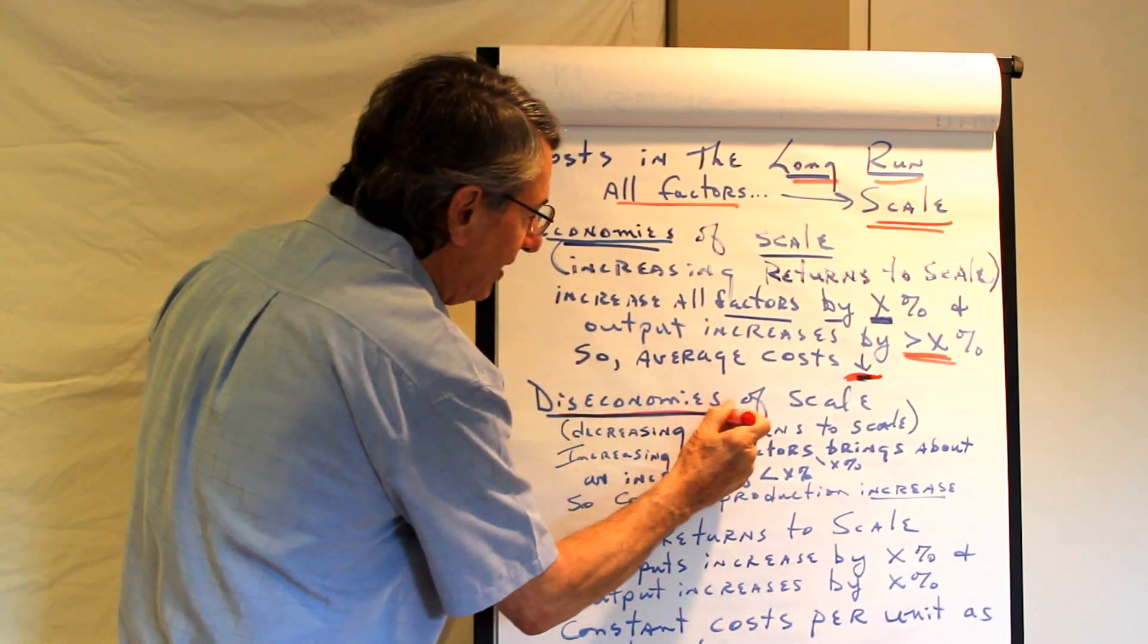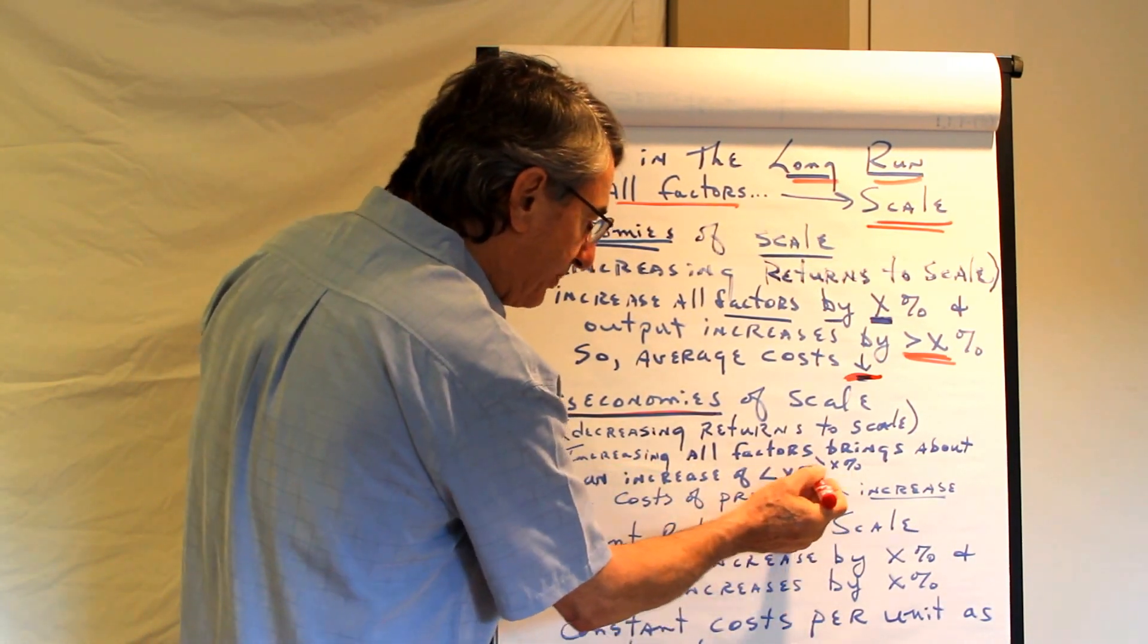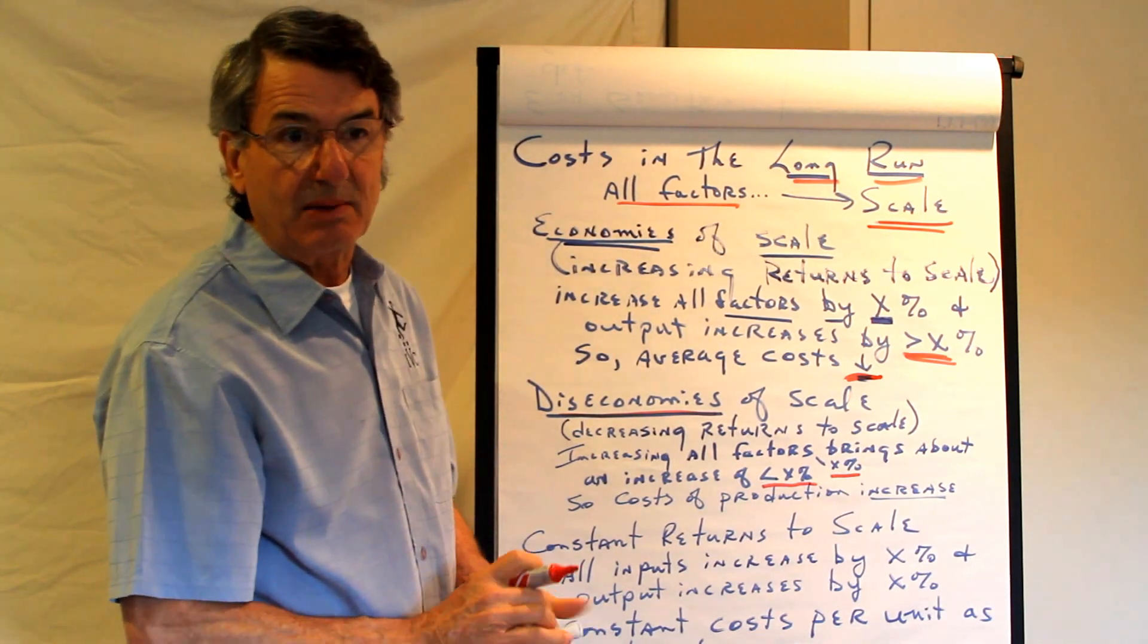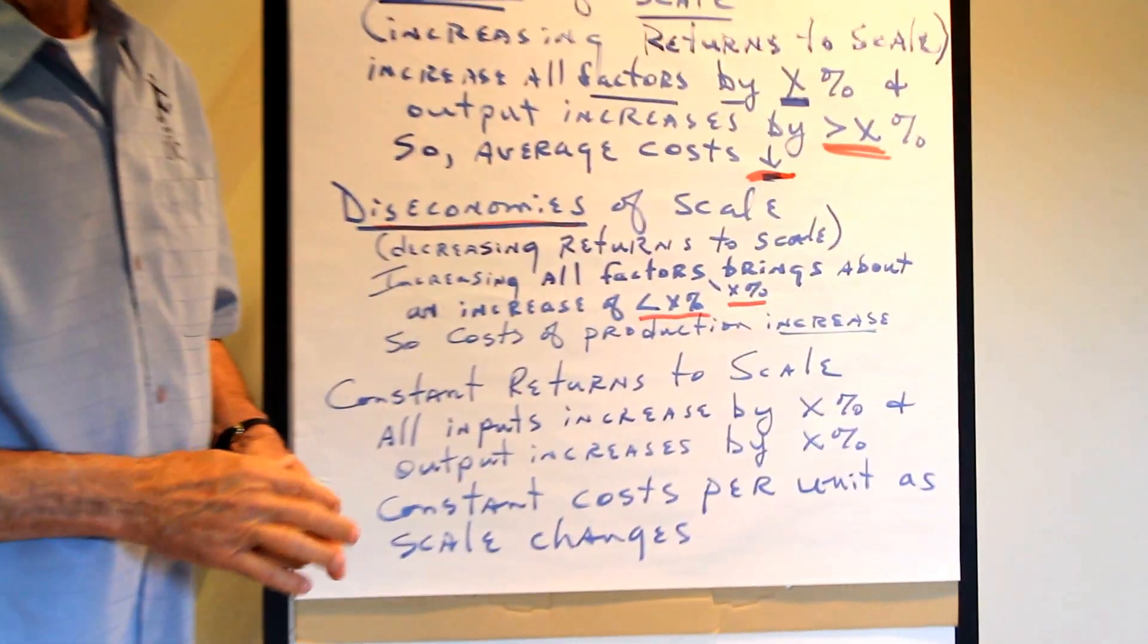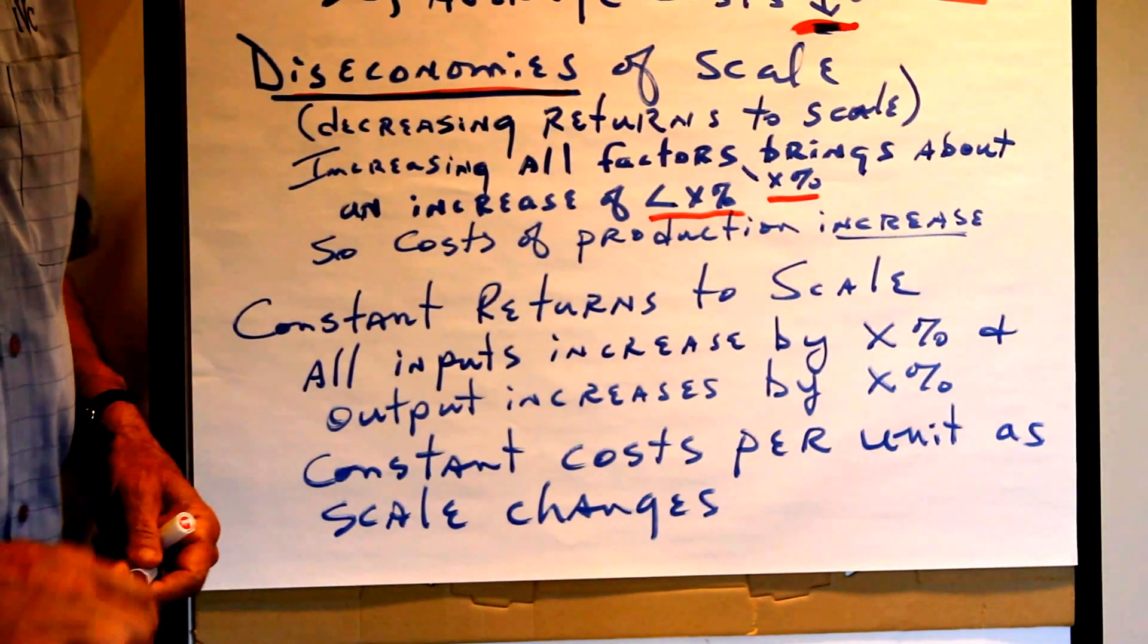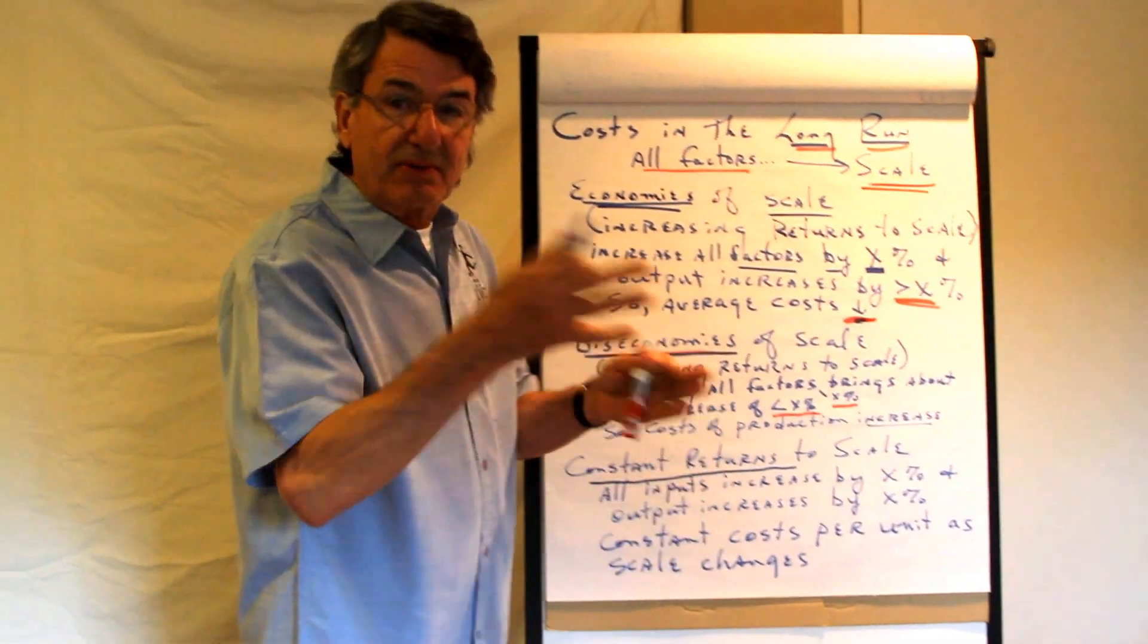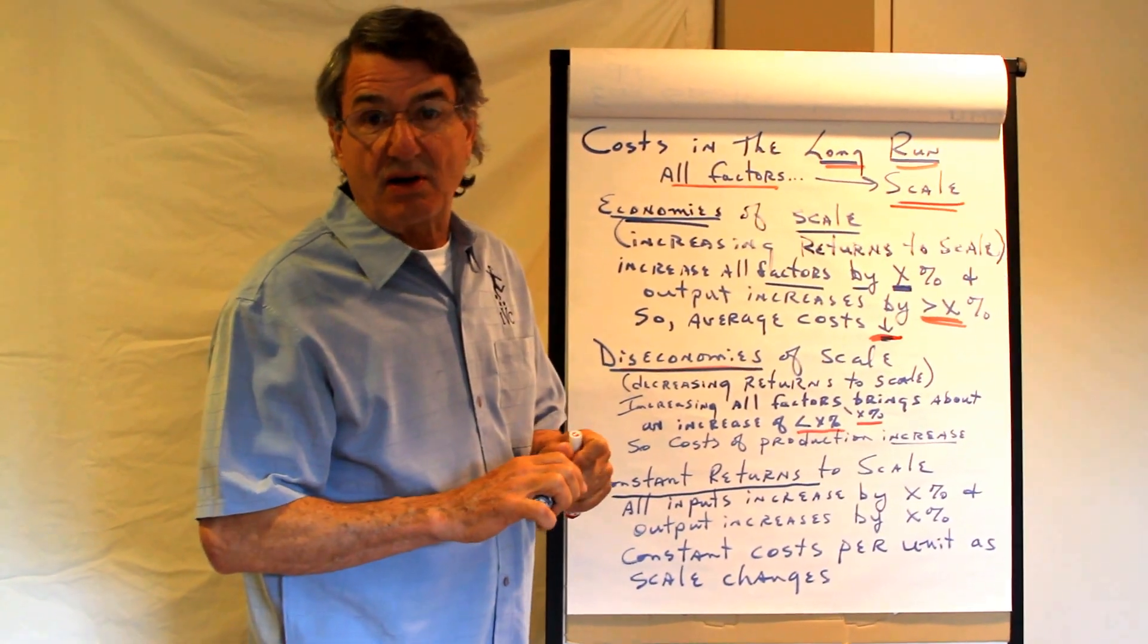Diseconomies of scale are the opposite. A firm buys some percent more of all resources and output increases by less than that percent. So if they get 10% more resources it costs them 10% more to buy the resources. They get less than 10% increase in output. That means their cost for each unit is going up. Then there are constant returns to scale and that says if you buy 10% more resources you get 10% more output. So in that case the costs are constant.